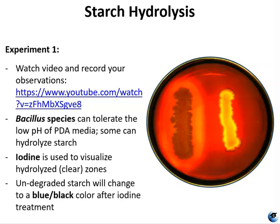For experiment one, you're going to watch a video in which two species of Bacillus bacteria are tested for starch hydrolysis. Bacillus are acetophilic and endospore-forming bacteria; therefore they can tolerate the low pH of the PDA media, and some can also hydrolyze starch, which is abundant in PDA. Potato dextrose agar has a lot of starch in it. Iodine is used to visualize the hydrolyzed clear zones in the media.